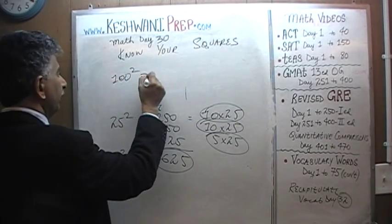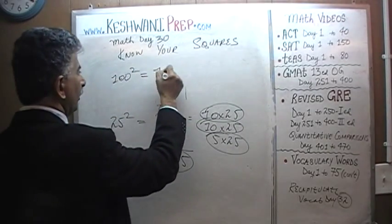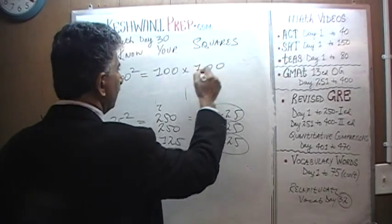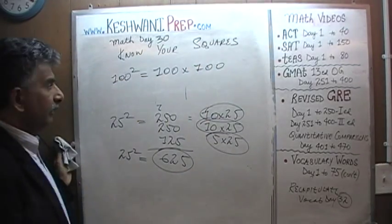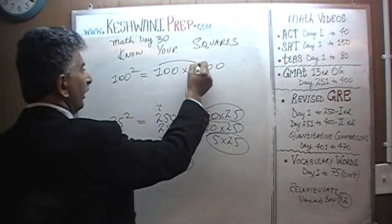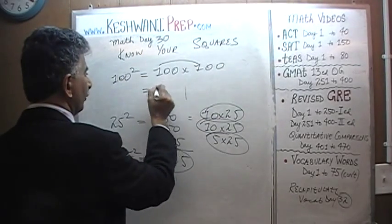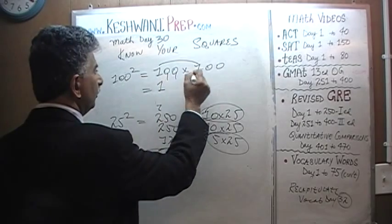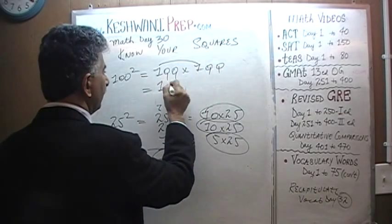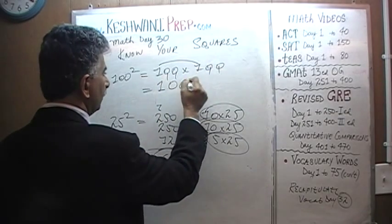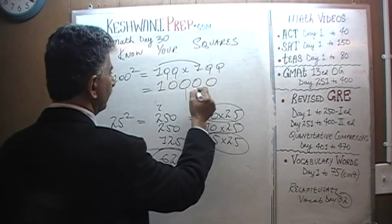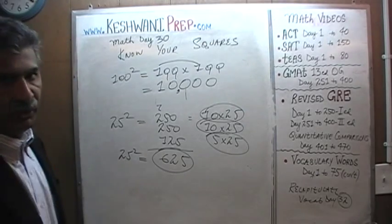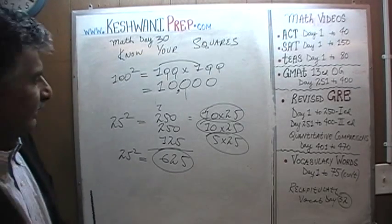How about 100 squared? 100 times 100: 1 times 1 is 1, and then we have four zeros. 100 squared is exactly 10,000.